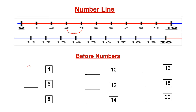Now the next number is number 6. Where is number 6 in the number line? Here, right? So before 6, which number will come? Yes, you are right — number 5. So before number 6, we write number 5.